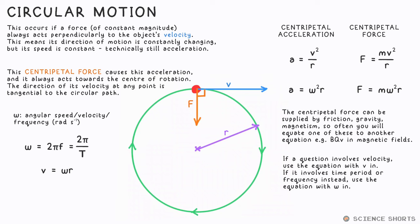If you're given the time period, you use the omega version and replace the omega with 2π over t. If you're given the actual speed though, you use the first equation: a equals v² over r or F equals mv² over r.